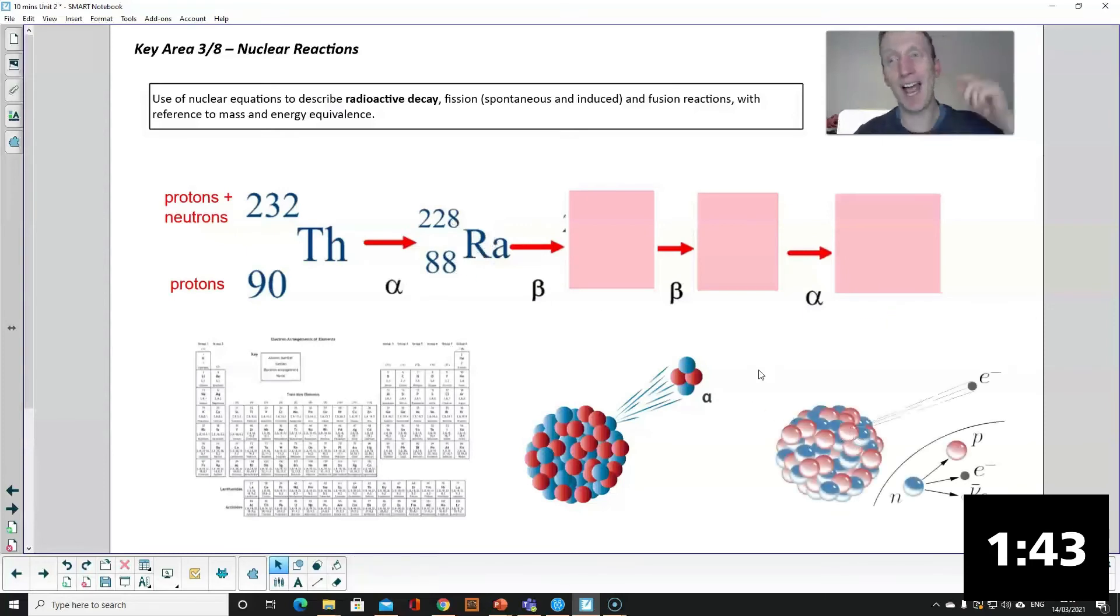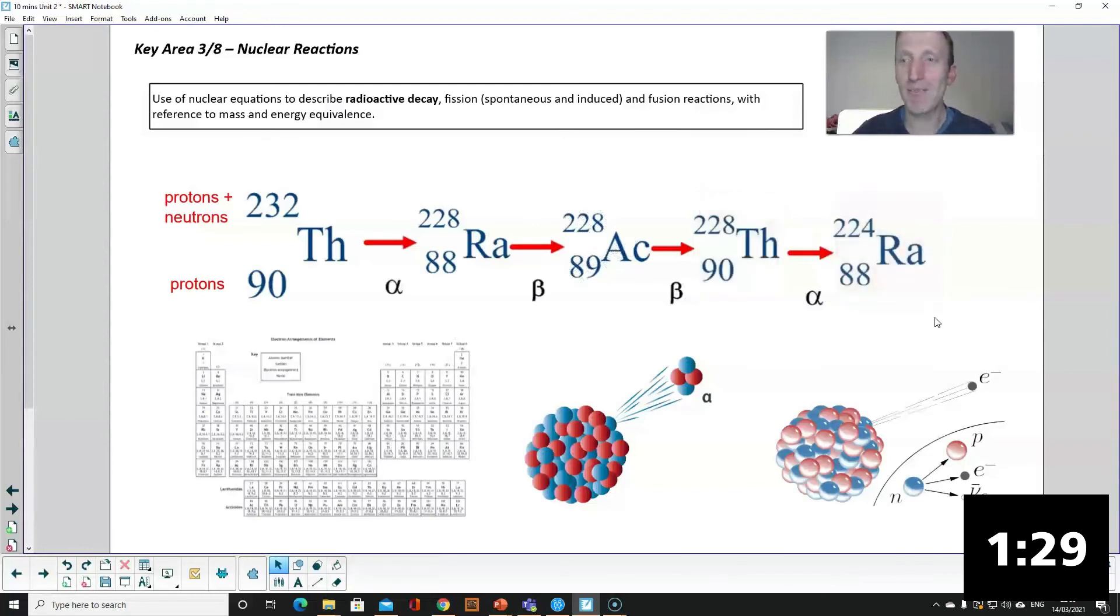For beta radiation what happens is a neutron splits into a proton and an electron the electron leaves the proton stays but all you need to remember is the top number stays the same the bottom number goes up one. Again you get a new element which you'll need to find in your periodic table. If it's gamma radiation there's no change the numbers stay the same the element stays the same as well.